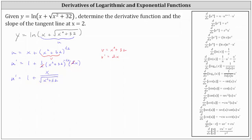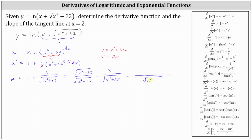Now let's find this sum. Notice how we can write 1 as the square root of the quantity x squared plus 32 divided by itself — this is still equal to 1 — and now we have a common denominator of the square root of the quantity x squared plus 32. So for the sum, the denominator is the square root of the quantity x squared plus 32, and the numerator is x plus the square root of the quantity x squared plus 32. You'll see in a moment why I decided to determine the sum this way.